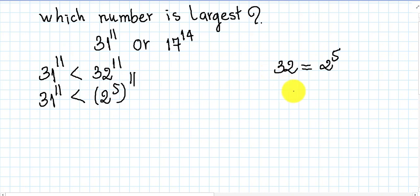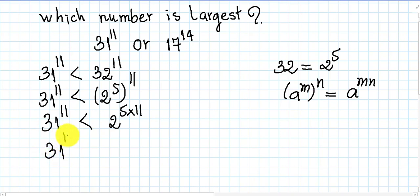So 31 power 11 is smaller than 2 power 5 all power 11. And then we use the rule A power M all power N equals A power M times N. So 31 power 11 is smaller than 2 power 5 times 11. Then we get 31 power 11 smaller than 2 power 55.